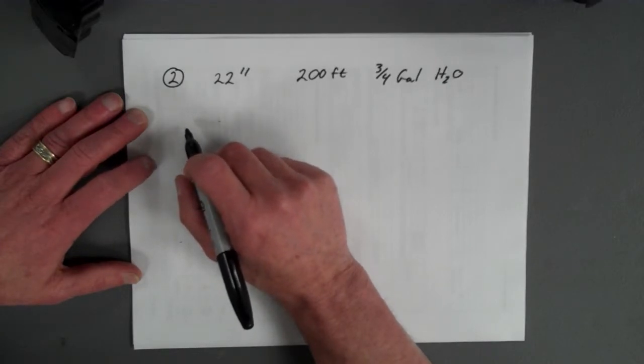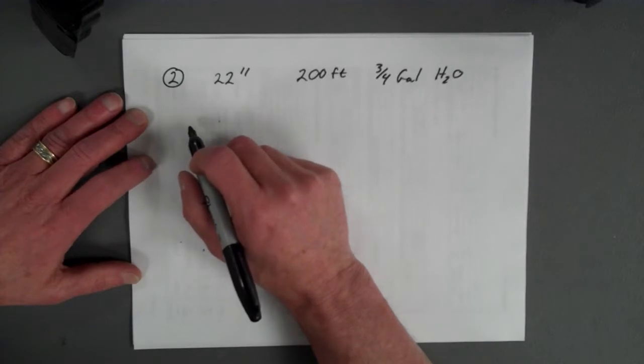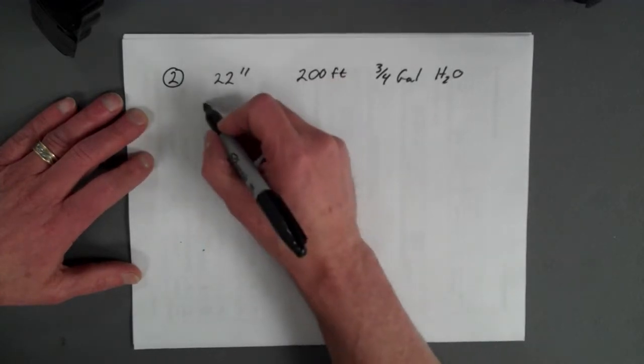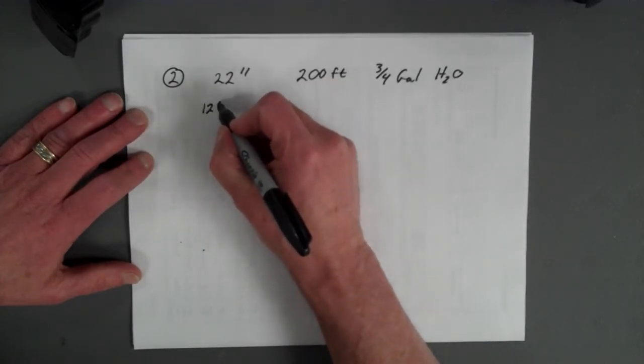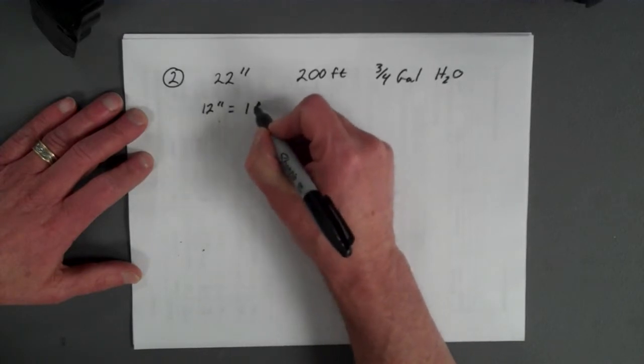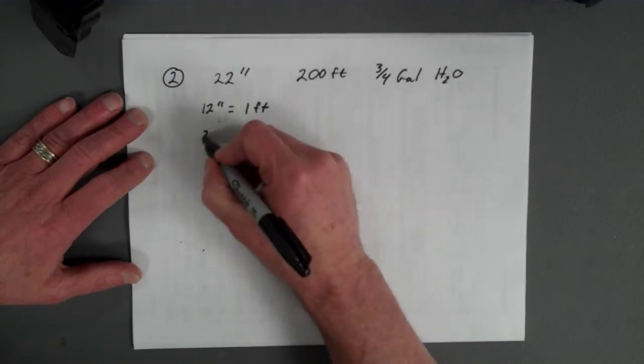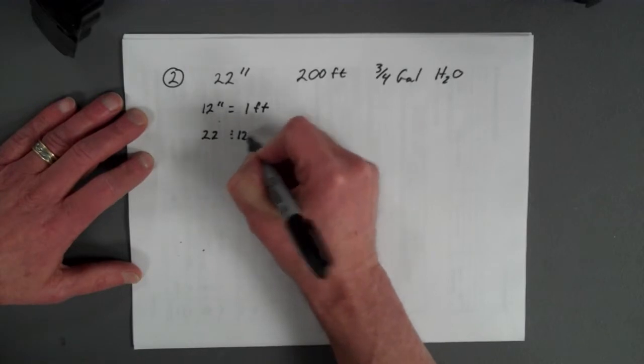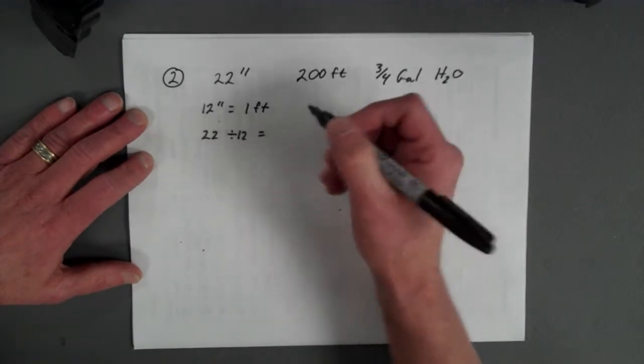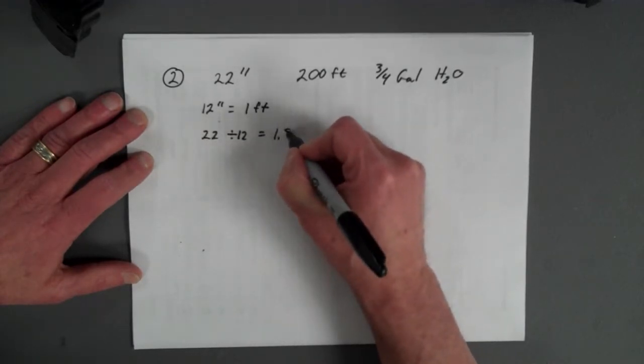So we have to convert that 22 inches for the width of your spray pattern to feet. So you take 22 inches divided by 12 inches per one foot and that equals 1.83 feet.